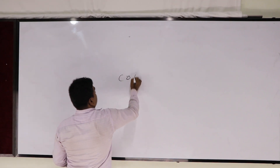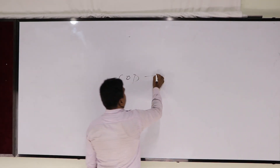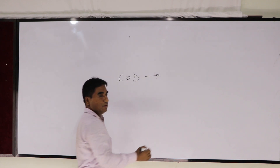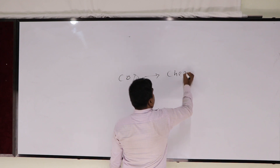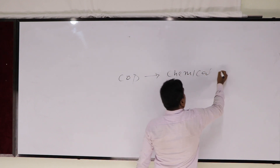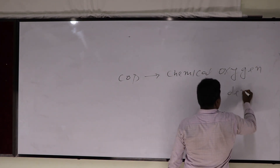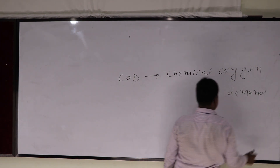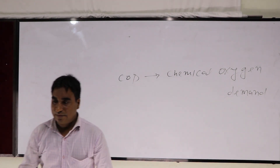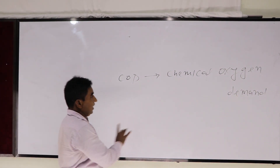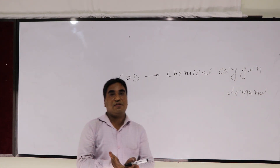COD relates to BOD. The value of BOD is 10 mg per litre, and the value can go up to 20 mg per litre. Chemical oxygen demand. Chemical oxygen demand is the value covering BOD and COD — that is the major difference in nature.